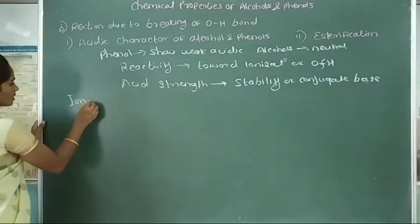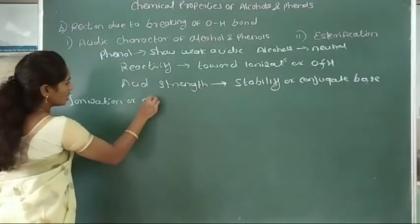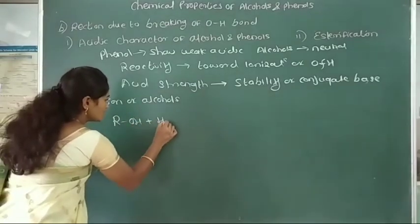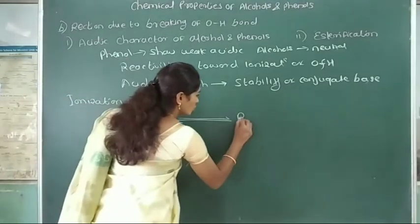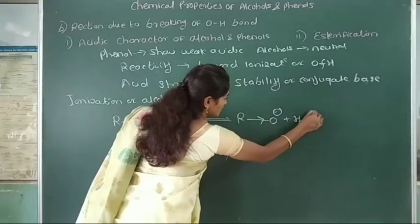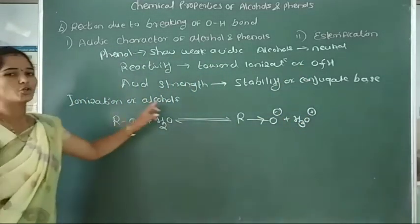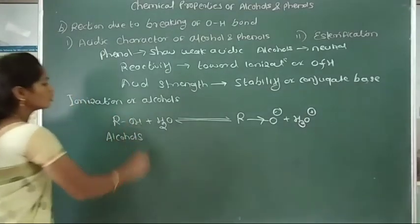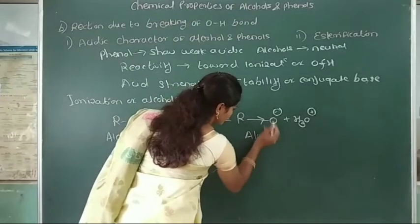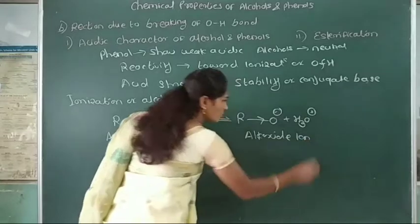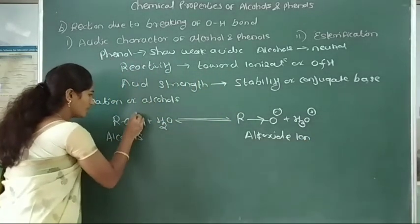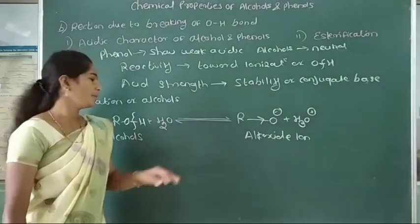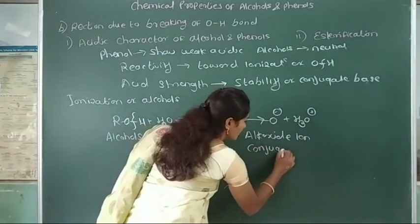The first point is ionization of alcohols. This ionization of alcohols is represented by the equilibrium: ROH + H₂O ⇌ RO⁻ + H₃O⁺. This is a reversible reaction. Here, the alcohol reacts with water to form the alkoxide ion. The alcohol is converted into the alkoxide ion after breaking of the oxygen-hydrogen bond. The alkoxide ion is the conjugate base of the alcohol.